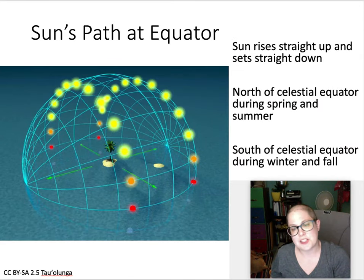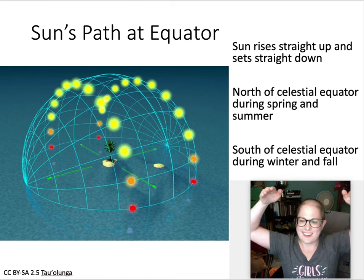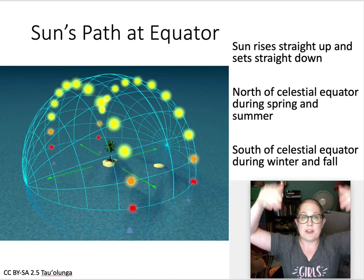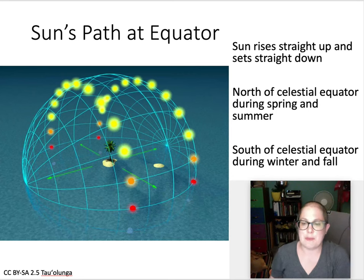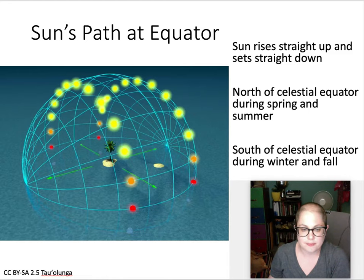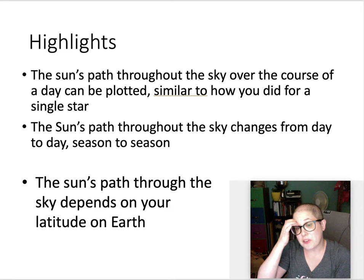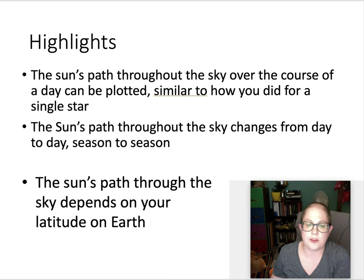At the equator, the Sun can go directly overhead at some times of year. Showing summer solstice and winter solstice, they're just on either side of directly overhead. So all year the Sun is in a band near directly overhead — just depending on which side of the year you're on. To summarize: the Sun's path through the sky over a day can be plotted just like a star on the inside of the celestial sphere, and that path changes from day to day and season to season depending entirely on where you are on Earth.